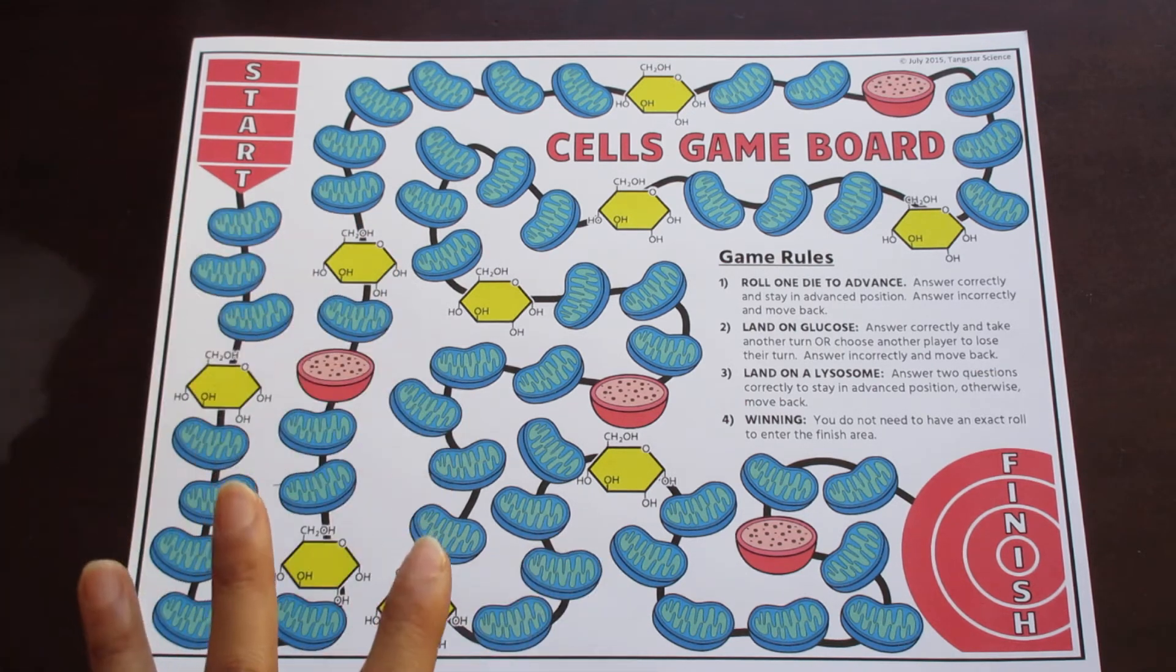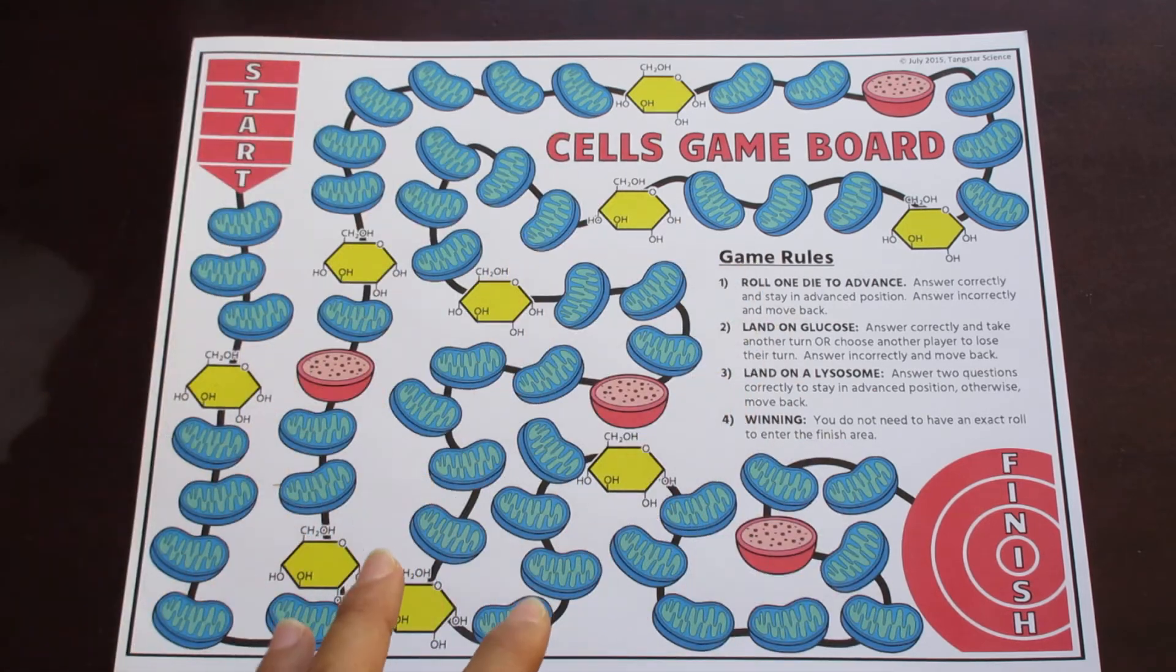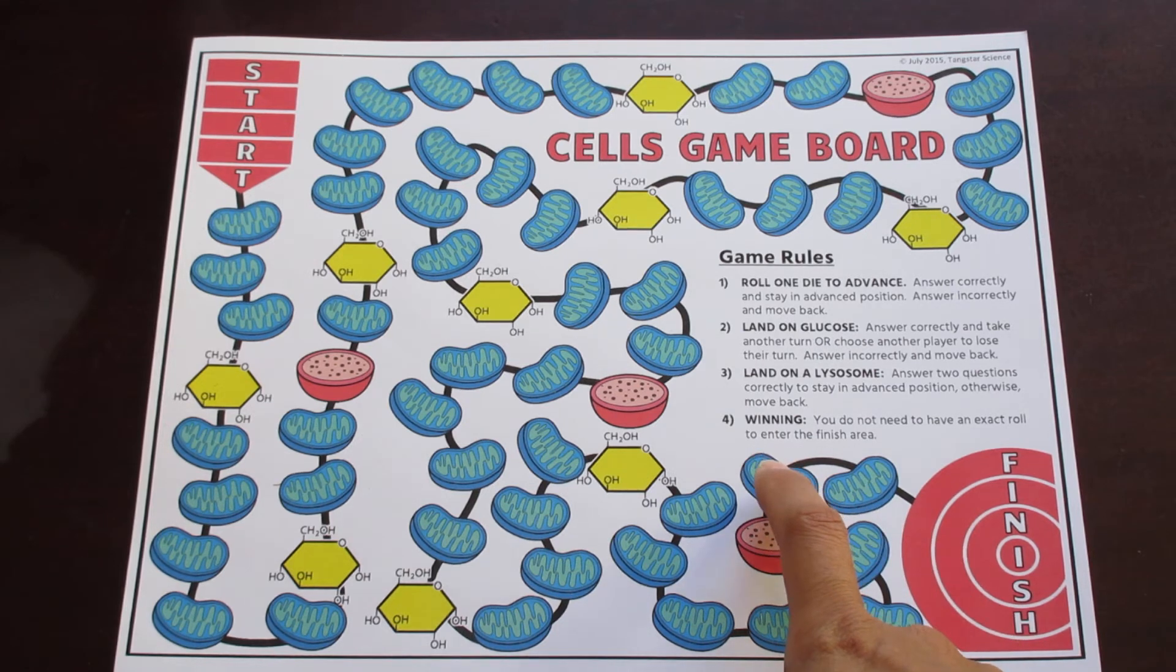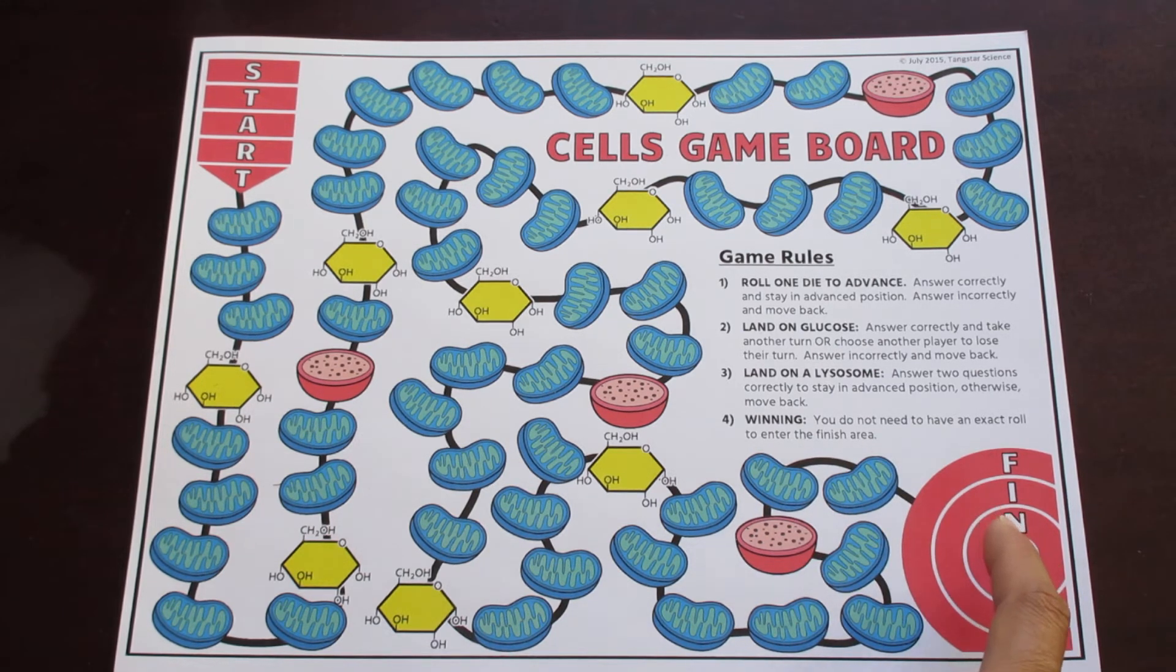When it comes to winning, they do not have to have an exact roll of the dice because that can get very frustrating for students. So let's say, for example, they're right here. They don't have to roll a two to get to the finish. You can roll anything that's two or above.